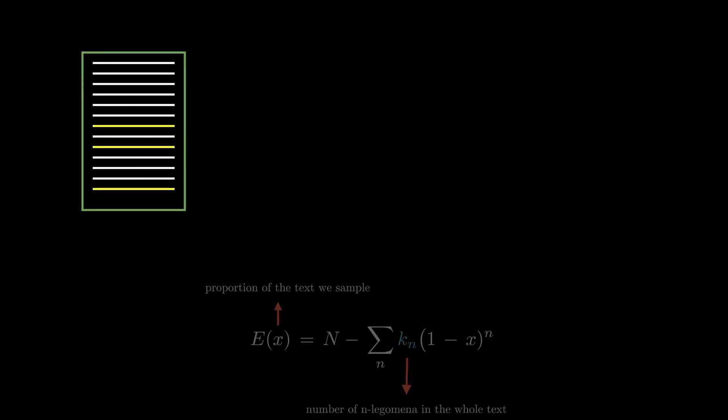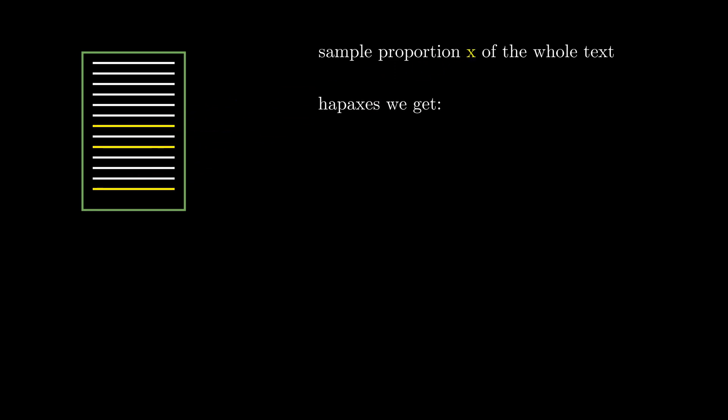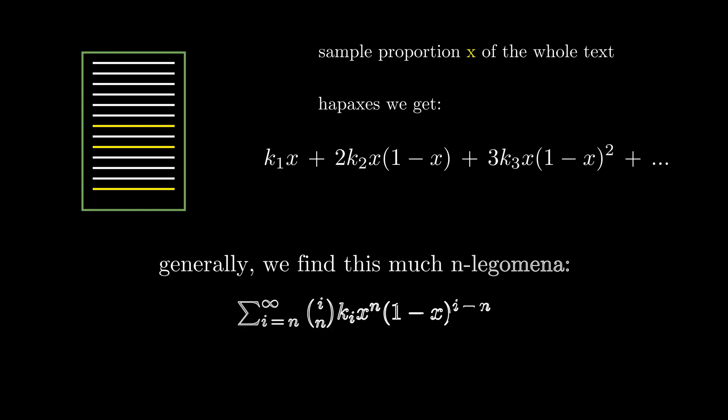Sampling a proportion x of the whole text should, naturally, give us a proportion x of all hapexes in our sample. But if we only got one instance of a particular dislegomena, it will also become a hapex for our sample. And this gives additional 2k2 x 1-x hapexes. The same goes for other n legomena.